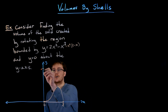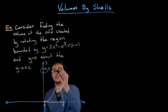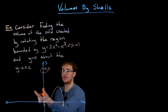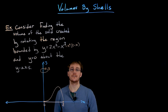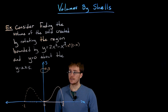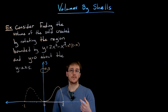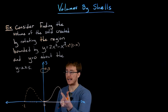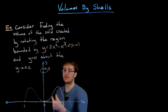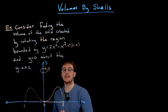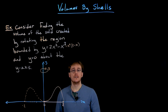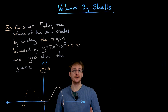We're going to rotate our region around the y-axis, and that is going to generate our solid object that we are trying to find the volume of. As we rotate our region around the y-axis, we end up with some kind of curved bowl-like shape with a very flat bottom. We will find the volume of this solid by using our new shell method.